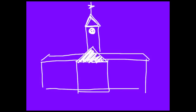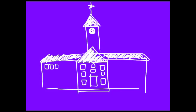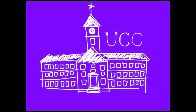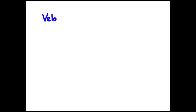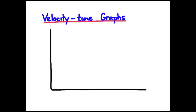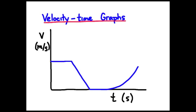This is part two of a two-part lesson on sketching motion graphs. I'm going to choose a velocity-time graph, again with several segments showing different kinds of motion.